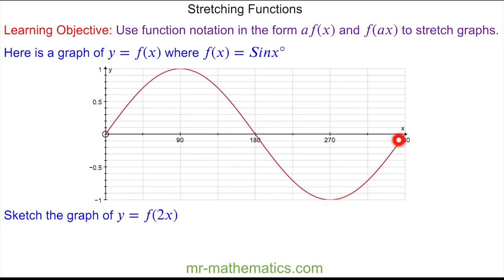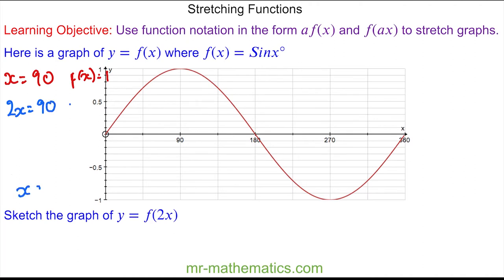We're going to perform a horizontal stretch using the function f of 2x. To do this we need to consider what's happening along the x-axis. When x is equal to 90 degrees, f of x is equal to 1. But when we have f of 2x, we have 2x is equal to 90 degrees, so x is equal to 45. So for f of 2x to equal 1, x is equal to 45 degrees, which is here. So we've transformed this vertex to here by halving the 90 degrees.